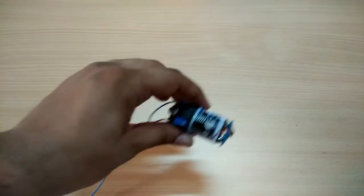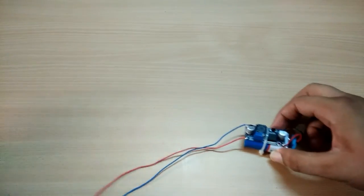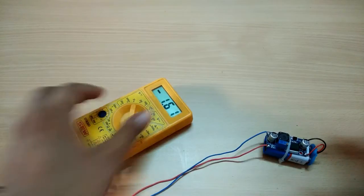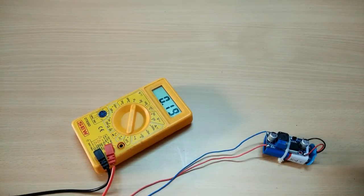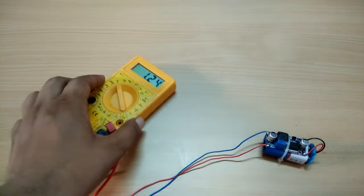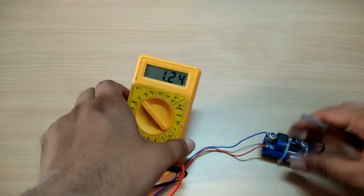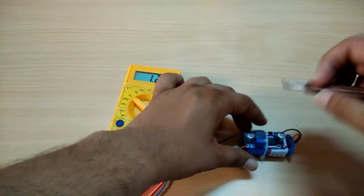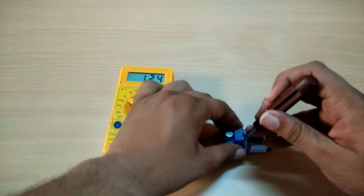After finishing this, now I have connected the circuit with a multimeter. Now check how the voltage is heading out of the circuit. Now you can see clearly there is 1.24 volts getting out of the circuit. Now let's adjust this potentiometer.